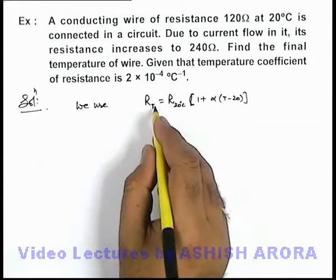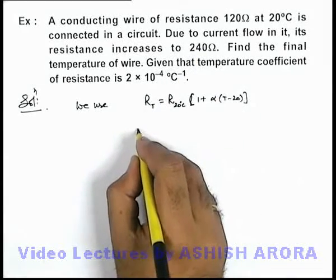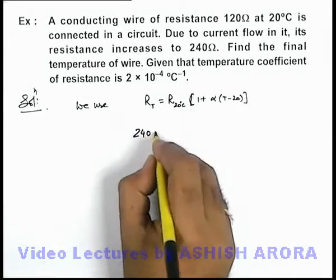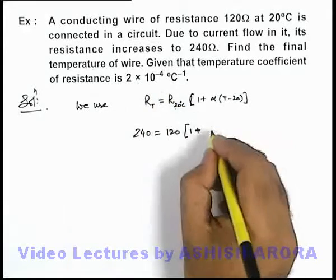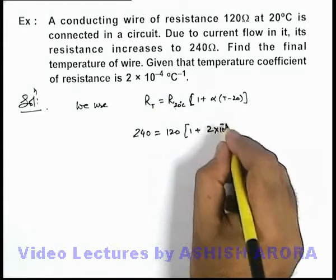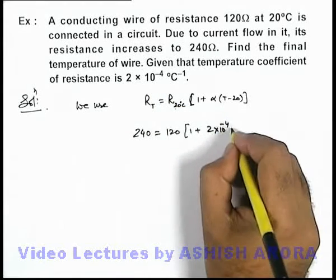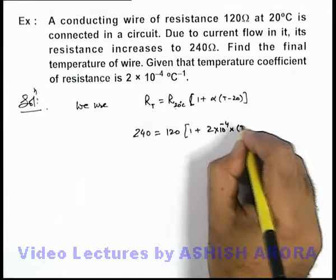If I substitute the values, you can see resistance at temperature T is 240. At 20 it is 120 multiplied by 1 plus, the value of alpha is 2 × 10^-4 multiplied by T minus 20.